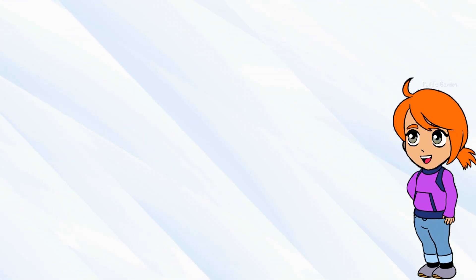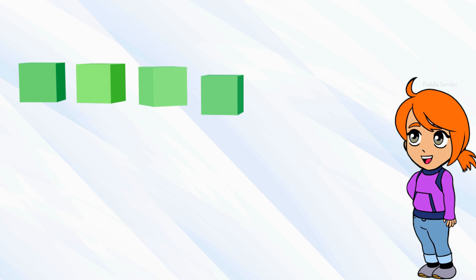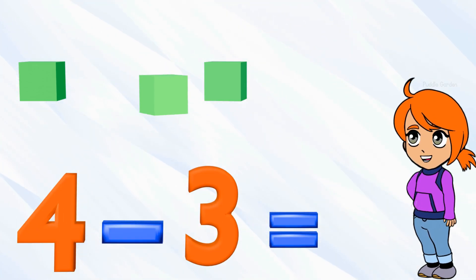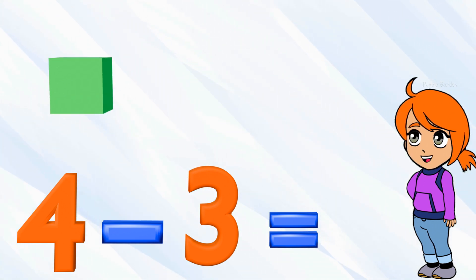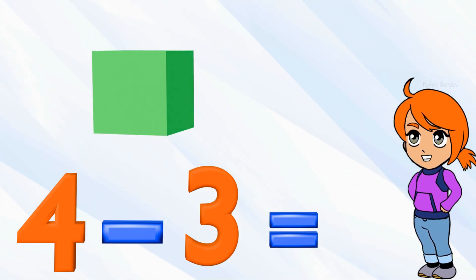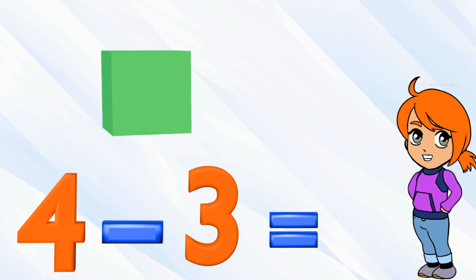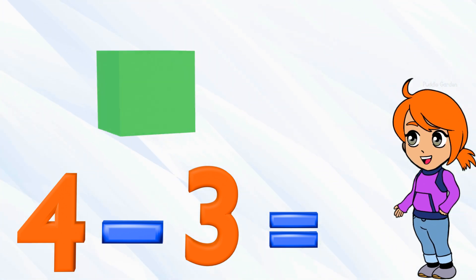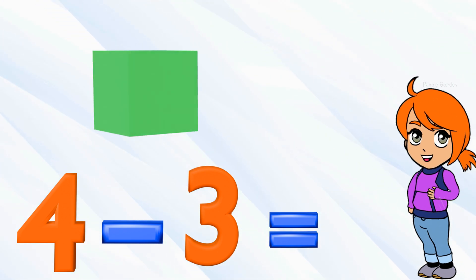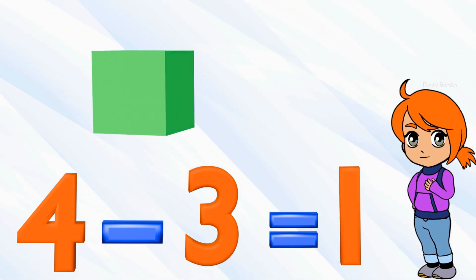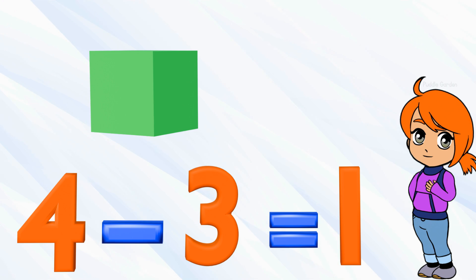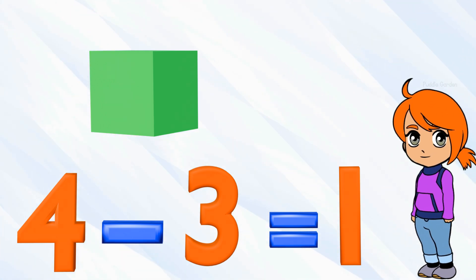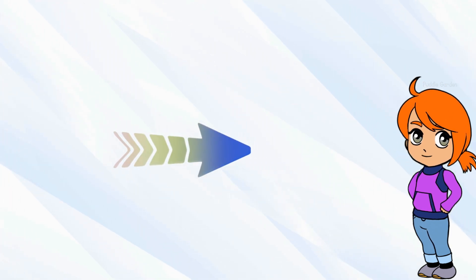Let's try one more together, and then it'll be your turn to practice on your own. If we have four take away three — four take away three — we're left with one. If we have four and we subtract three, we're left with one. So four subtract three equals one. Nice work!